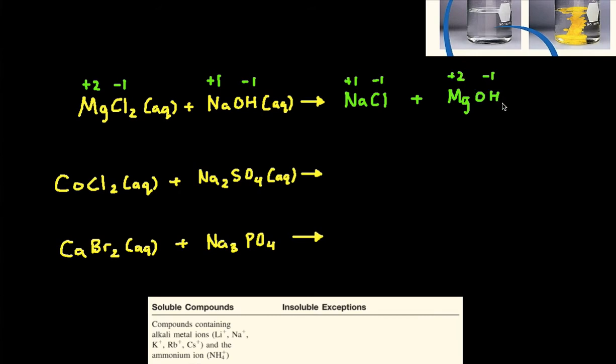We take the 2 right here and we bring it down to give us a subscript of 2 for the hydroxide. And then the 1 becomes a subscript of the magnesium.